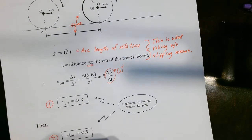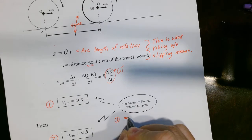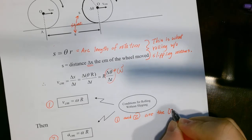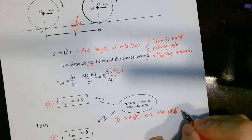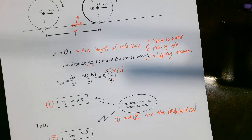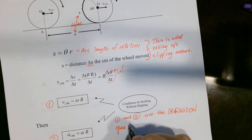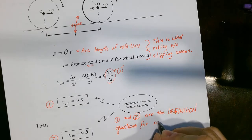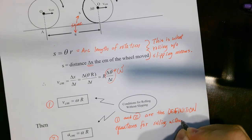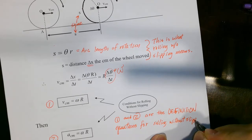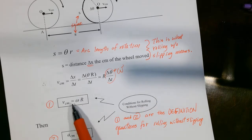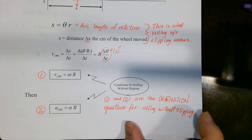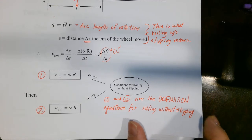Equations one and two — v_cm = ωr and a_cm = αr — are the defining equations for rolling without slipping. When you see these conditions hold, that's representing rolling without slipping.